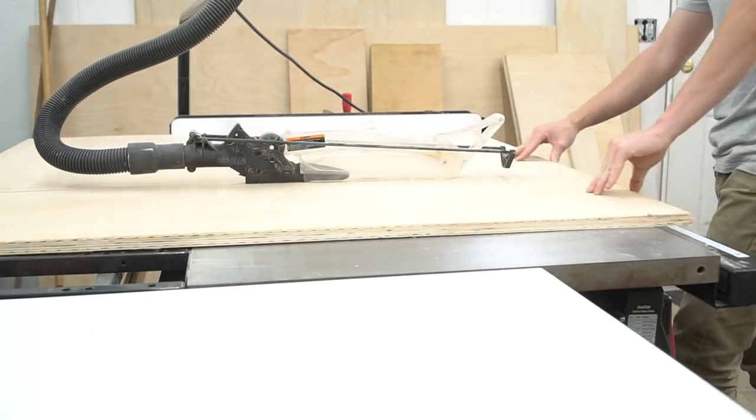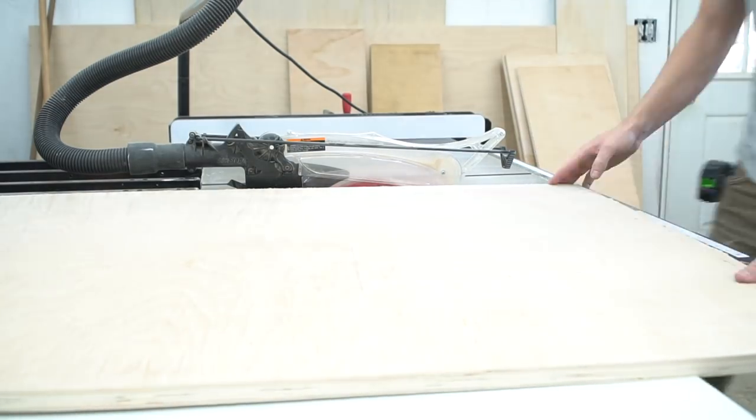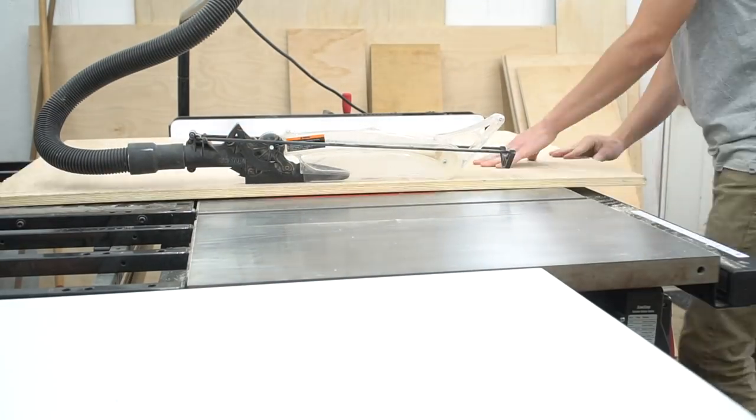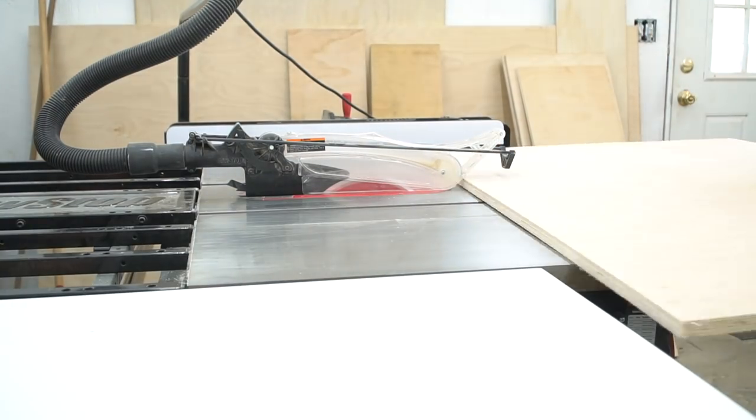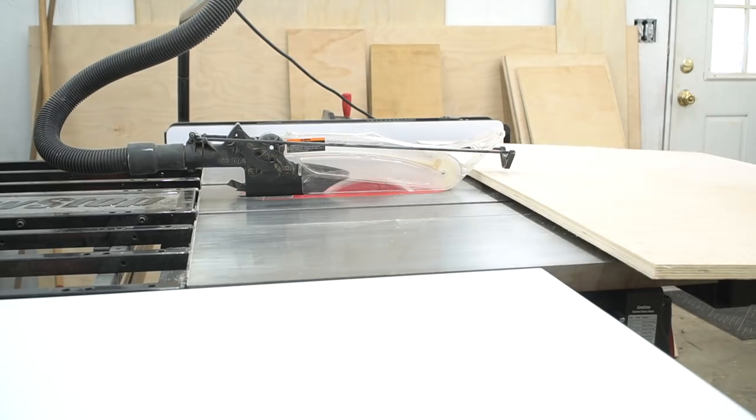Moving on to drawer fronts. Cut a piece of ¾ inch plywood to the correct width and a little longer than it needs to be. This is going to allow us to have continuous grain pattern on the front of the cabinets. Now cut each drawer front in order as they go on the cabinet.